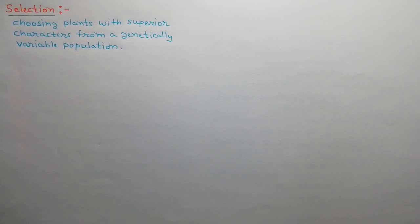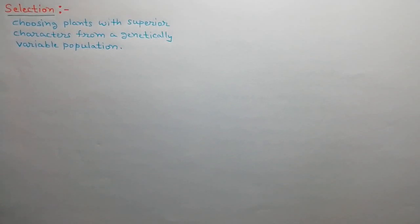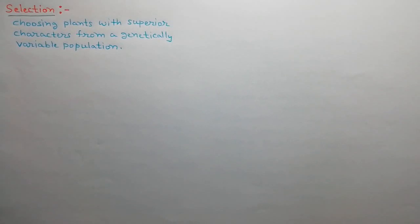First of all, we will discuss about the selection. Different genotypes reproduce differently in a population. As a result, a genetically variable population develops. We select the plants with superior characters from this genetically variable population and collect their seeds for growing the next generation. This process is called selection.